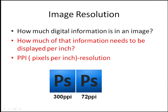The next question is: how much of that digital information needs to be displayed per inch? Here on screen I have a quick example — the Photoshop logo printed at two different resolutions. Resolution is the total amount of digital information in the image and how much of that information is displayed per inch, which is called PPI — pixels per inch.